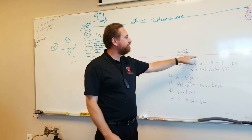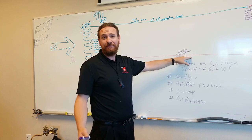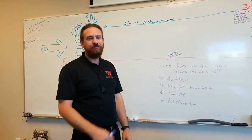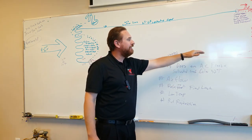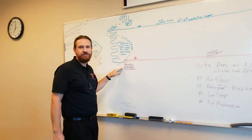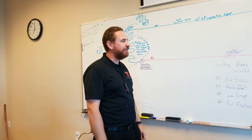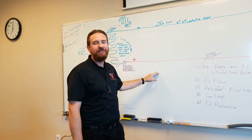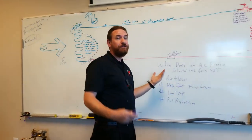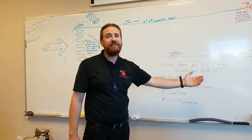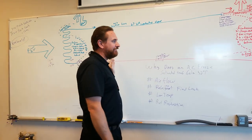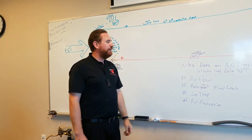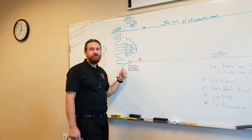Kinks in refrigerant lines are another restriction cause — when lines are run inside walls and kinked during bending, they restrict flow just like kinking a straw. The pressure drop across the kink drops saturation temperature. A quick check: temperature on one side where the line enters the wall should be close to the temperature on the other side — a significant temperature drop indicates a kink. Any component between the outdoor unit and the evaporator that could be clogged causing a pressure drop will cause the metering device to see too-low pressure and the unit will freeze.